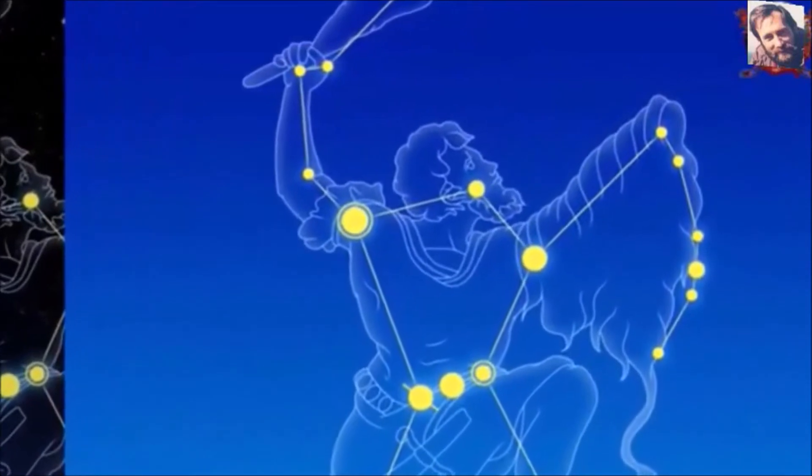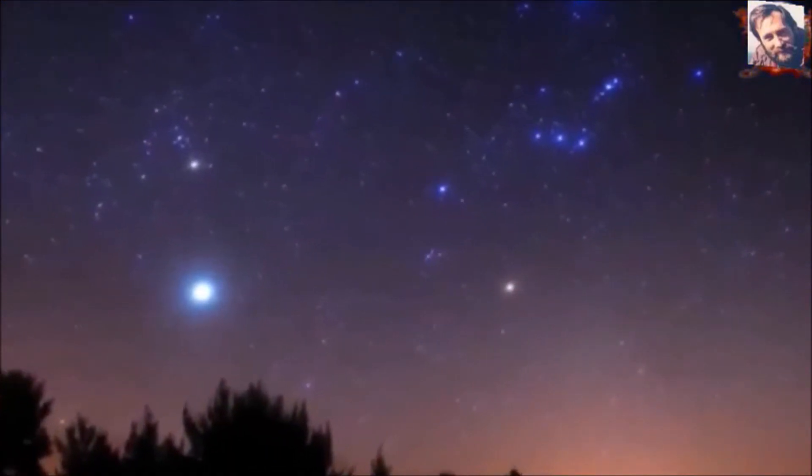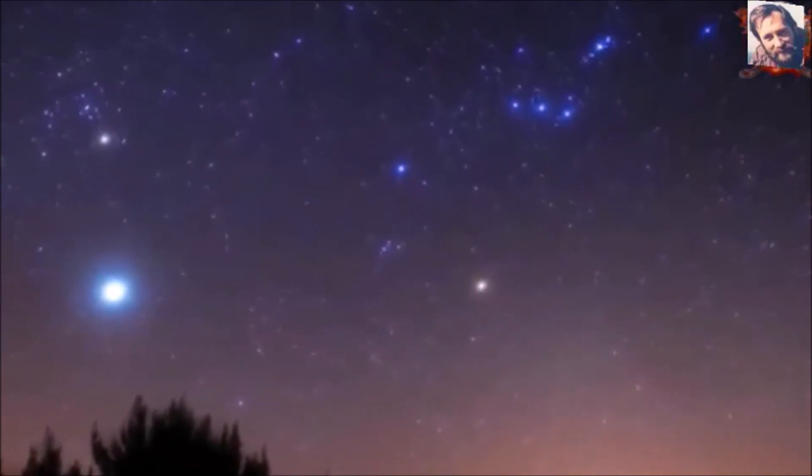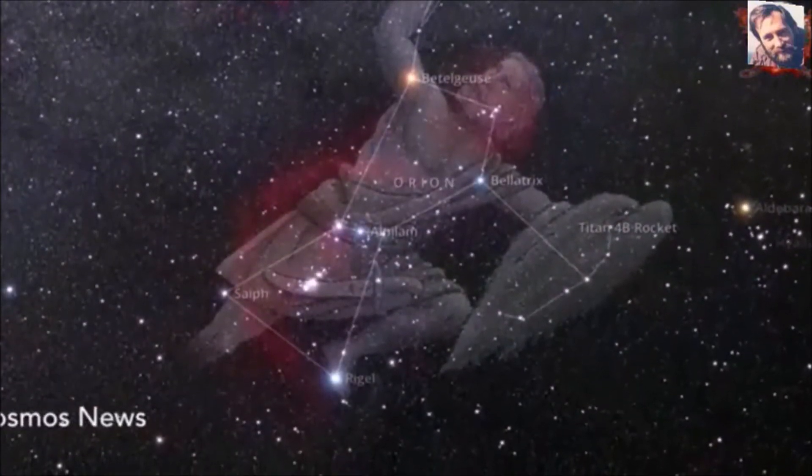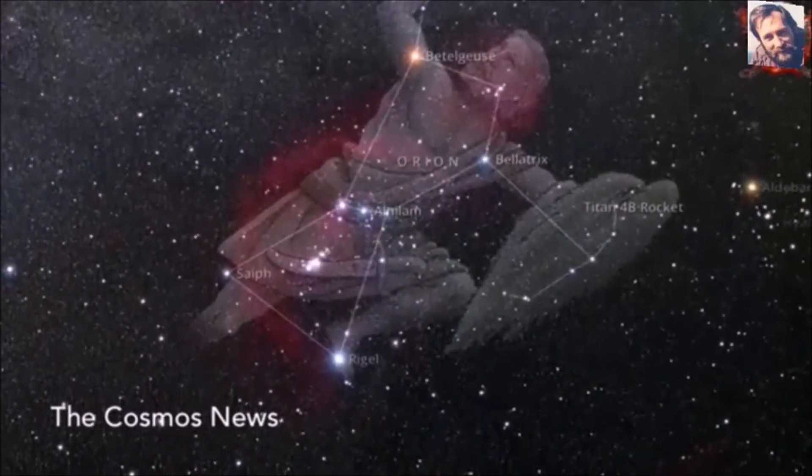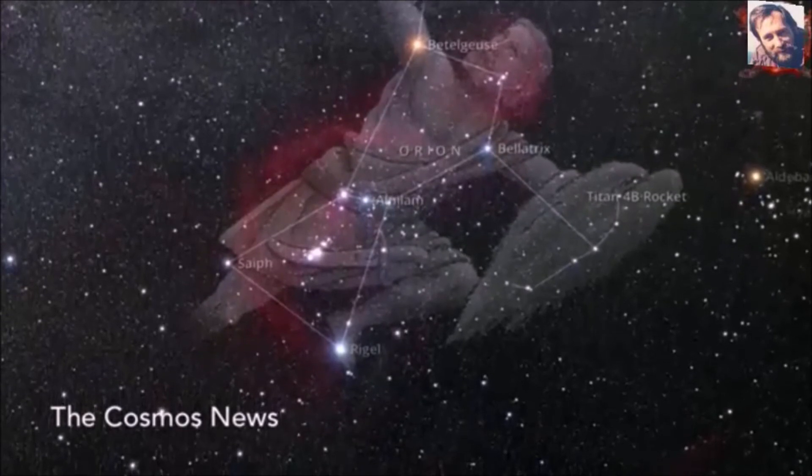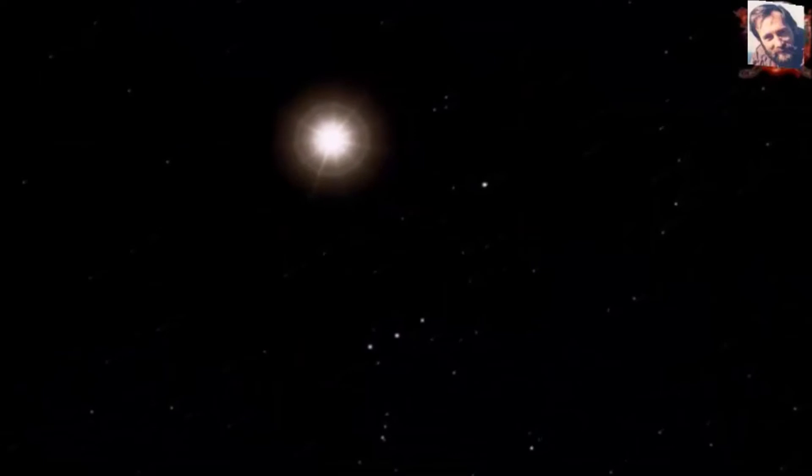Stars designated as Alpha are typically brightest in their constellations. But Betelgeuse is Alpha Orionis, despite the fact that it's fainter than Orion's other bright star, Rigel. Betelgeuse is the tenth brightest star in the sky overall, and it's the seventh brightest star visible from most of the United States, Canada, Europe, and the majority of the Northern Hemisphere.